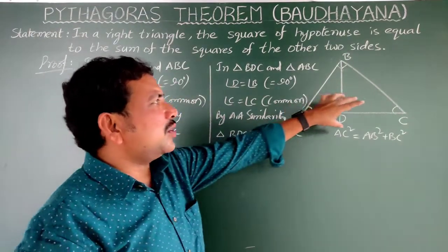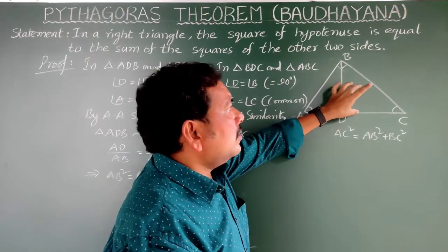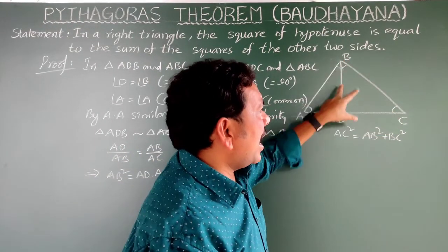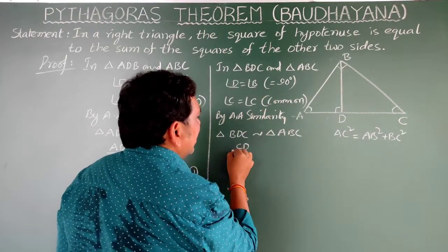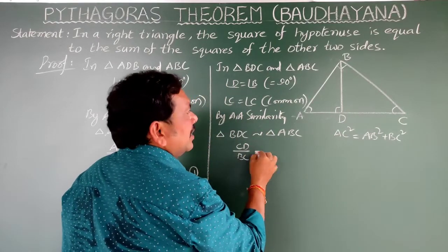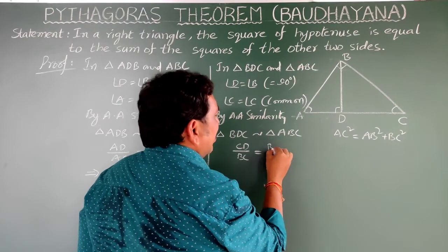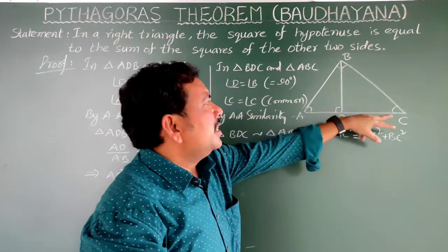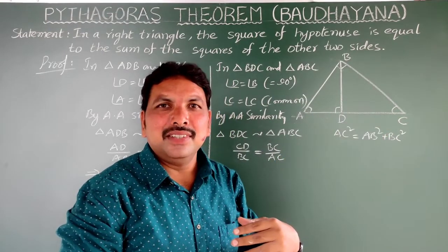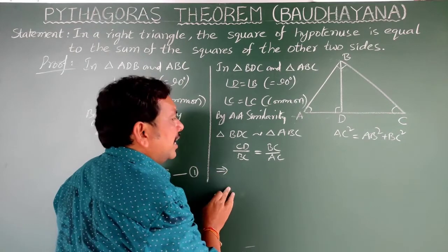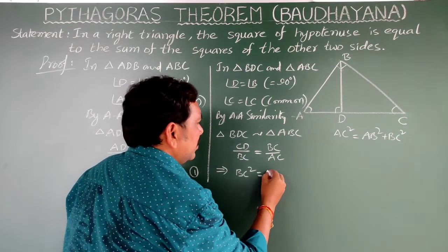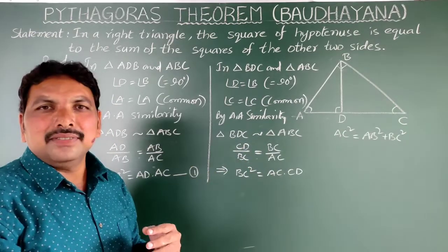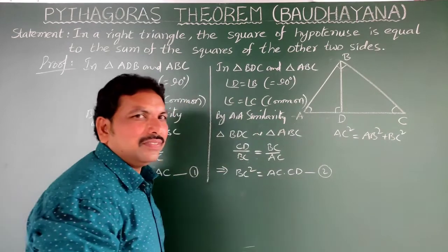Again, these two are similar triangles. So if two triangles are similar, the corresponding sides are in the same ratio. In triangle BDC, taking CD/BC = BC/AC, we get BC × BC = AC × CD, which means BC² = AC × CD. Consider this as equation number 2.